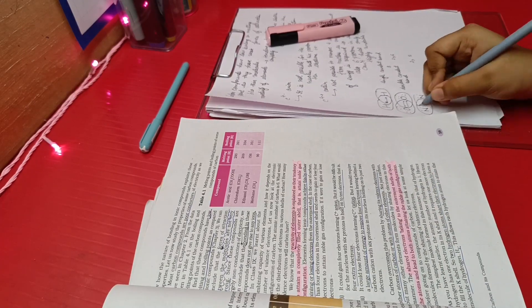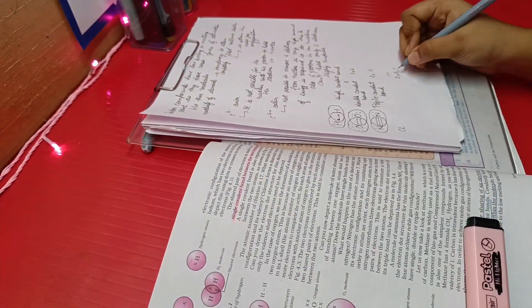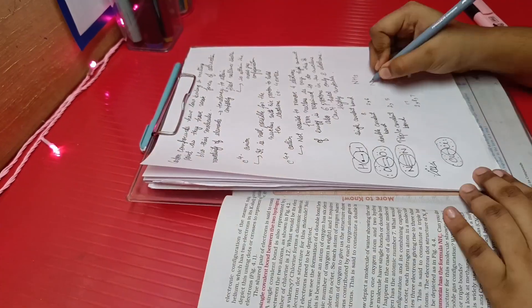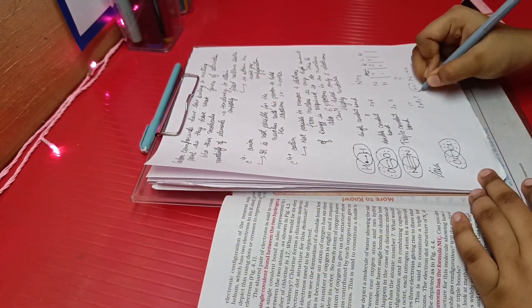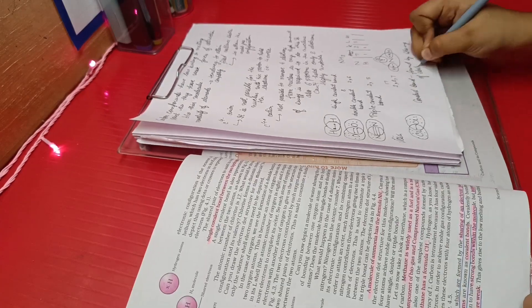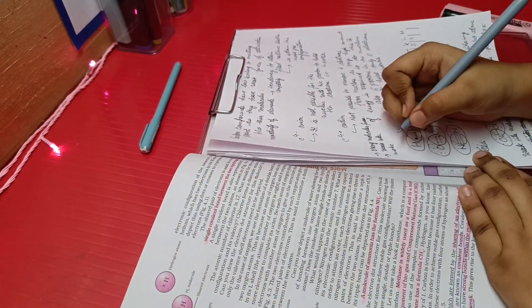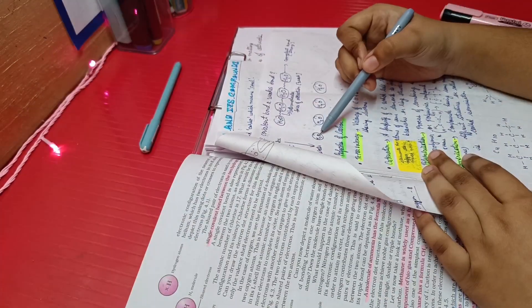I am also solving the in-text questions that are given in the purple colored box because some questions also come from these boxes. For making compounds and Lewis dot structures, you must be thorough with the valency that you have already studied in grade 9. And also, don't forget to make your own notes by seeing a one-shot lecture.